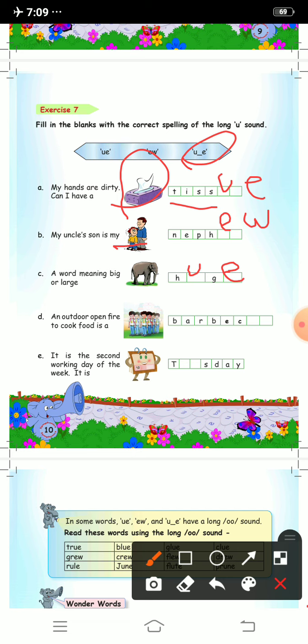D is an outdoor open fire to cook food is a barbeque. Here also it will become u e. The word is called barbeque. Here we write c-u-e.